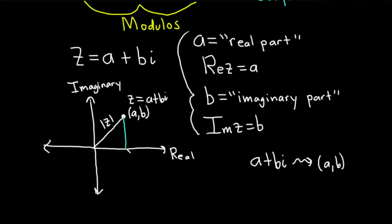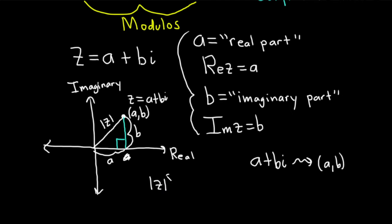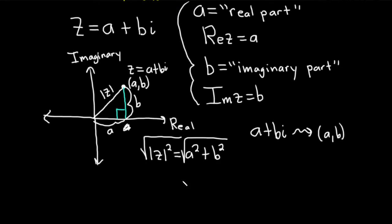Let's draw a triangle — a right triangle, indicated by a little box at the corner. So if this is the complex number a plus bi, associated with the point (a, b), this horizontal distance would be a and this vertical distance would be b. Now you could use the Pythagorean theorem, which says that the hypotenuse squared is equal to the sum of the other legs squared: a squared plus b squared. Taking the square root of both sides, and because the modulus is a distance we only want the positive root, we end up with the modulus of z being equal to the square root of a squared plus b squared. That's the formula for the modulus of z.